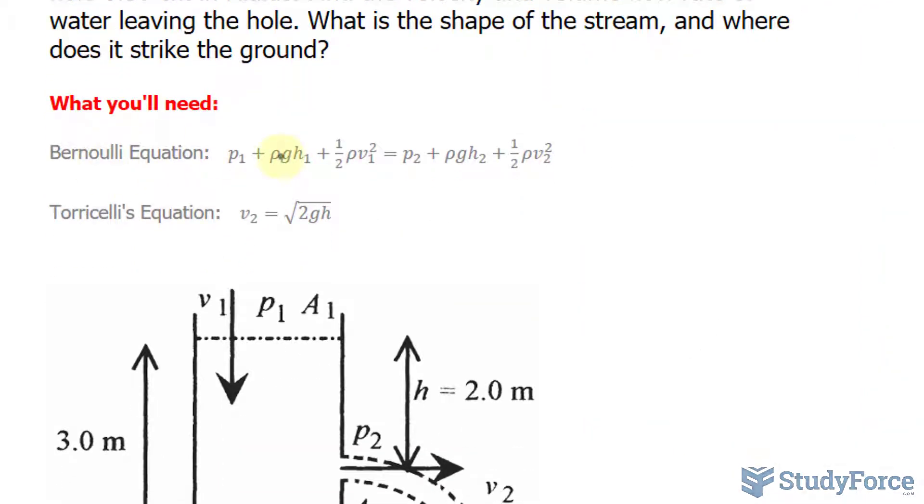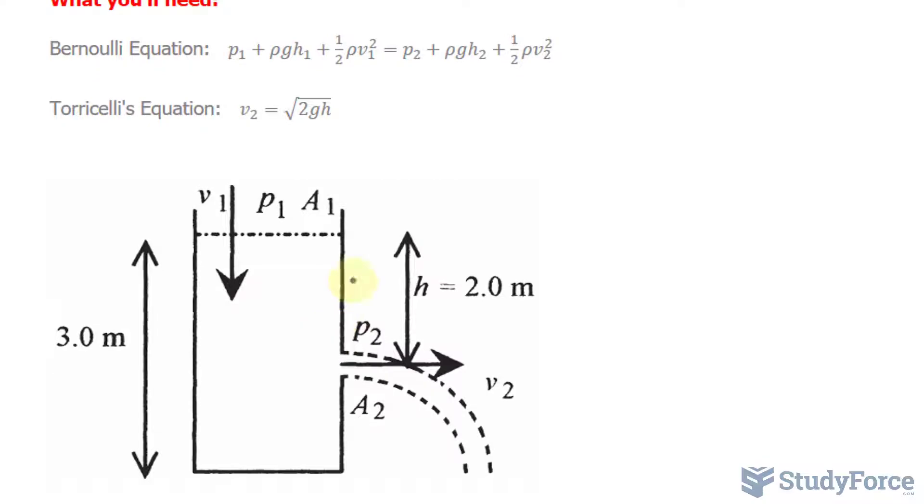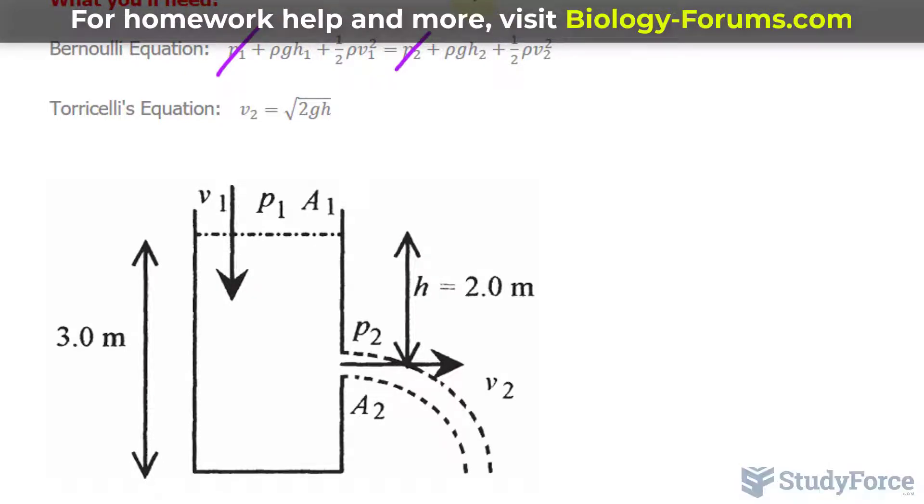Let's quickly look at Bernoulli's equation. We have pressure at the top P1, plus potential energy per unit volume ρgh1, plus kinetic energy per unit volume ½ρv1². That's at the top of the container. The right side references those three things at the hole. Since both the fluid at the hole and at the top are open to atmosphere, the pressures at these two points will be the same. So P1 and P2 can be canceled out of the equation.